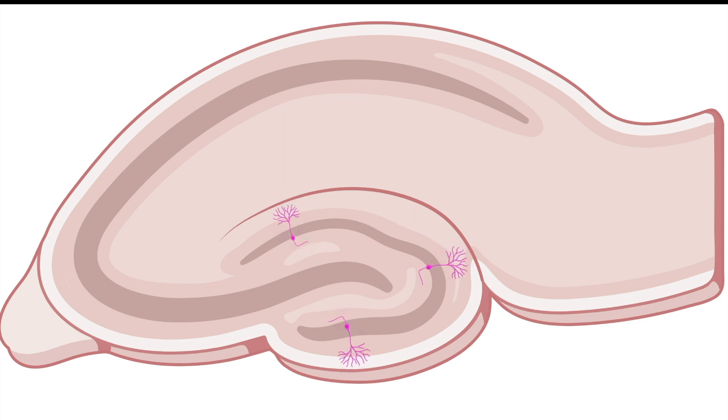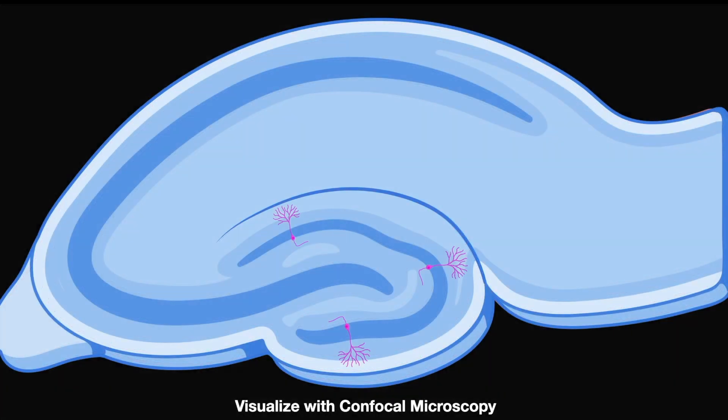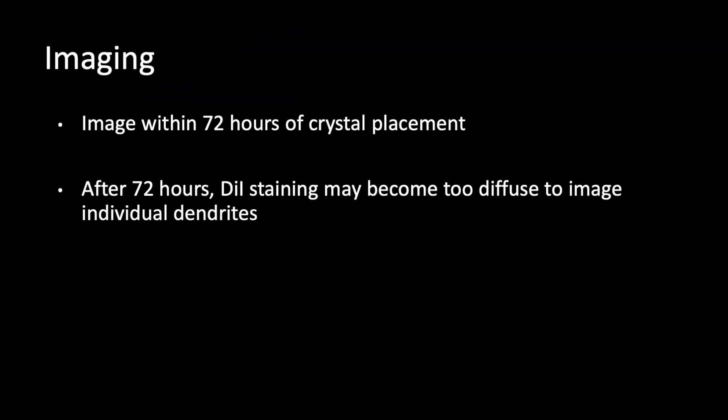For optimal visualization of spines labeled with Di-I, slices should be imaged 24 to 48 hours after crystal placement. Any time after that, the dye will become too diffuse to visualize individual dendrites.